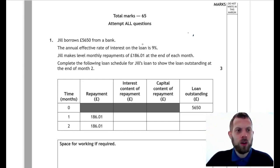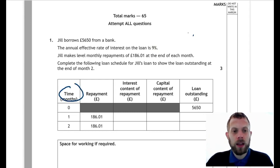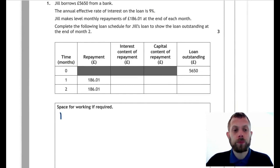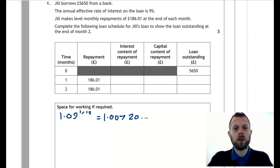We are given an interest rate of 9%, and this is an annual interest rate. However, in the table it's monthly repayment. So the first thing we will do is convert this 9% into a monthly interest rate. The interest multiplier is 1.09, and we raise that to the power of 1/12. And this will give us this number here.